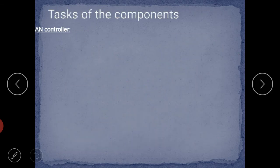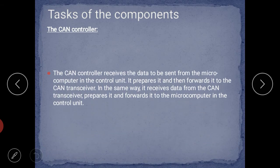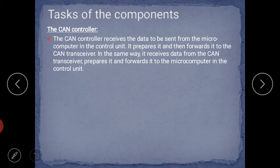Now, task of the components. First, the CAN controller: the CAN controller receives the data to be sent from the microcomputer in the control unit, prepares it, and then forwards it to the CAN transceiver. In the same way, it receives data from the CAN transceiver, prepares it, and forwards it to the microcomputer in the control unit. So the CAN controller processes data in both directions between the microcomputer and the transceiver.